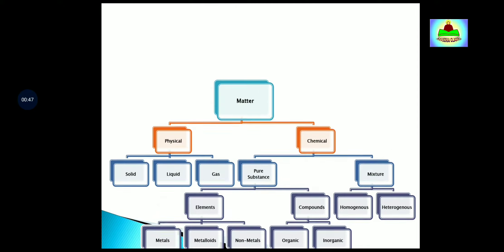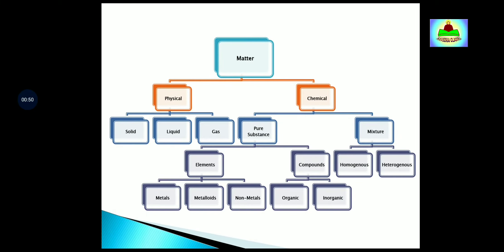Now we will understand what is matter. As you already learned in your previous classes, anything which occupies space and has mass is called matter. On the basis of their properties, matter is divided into two parts: physical and chemical.